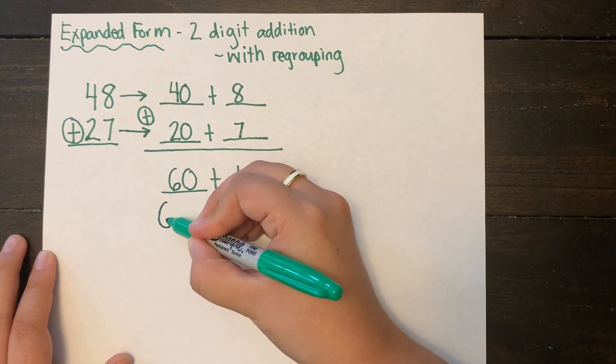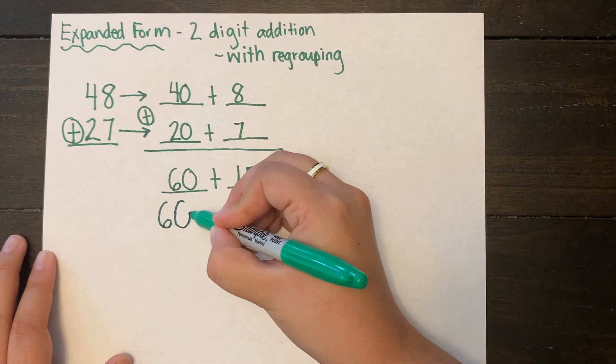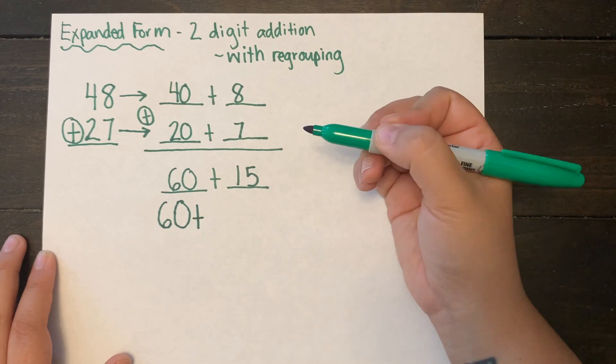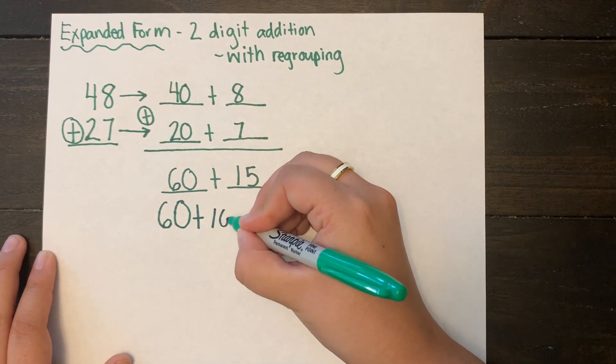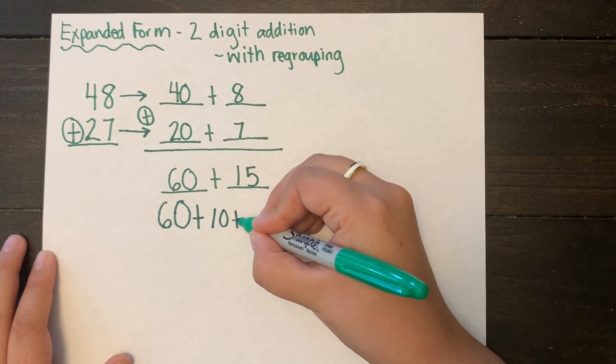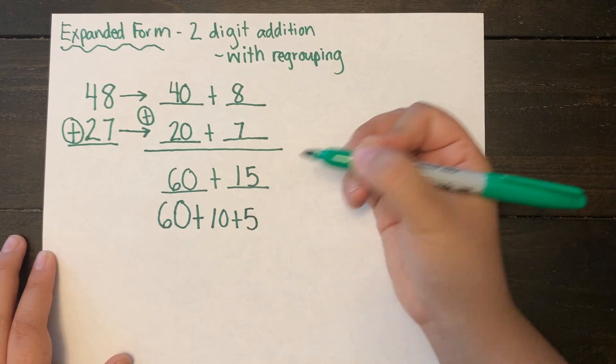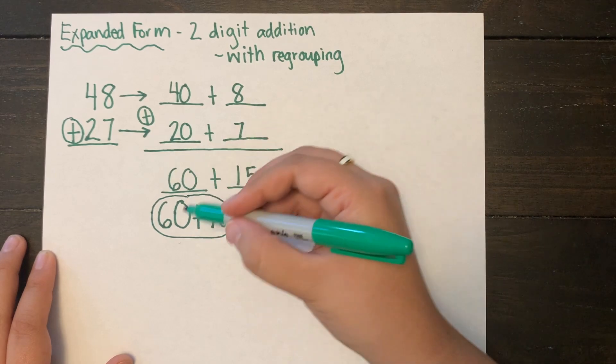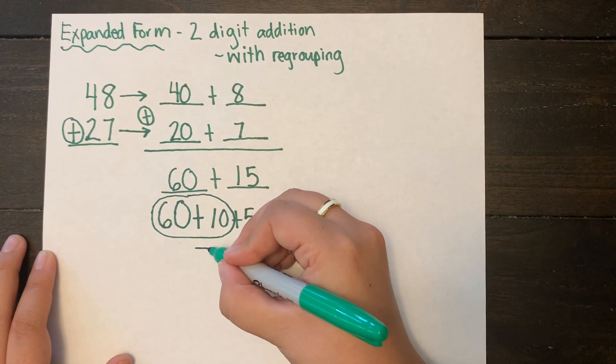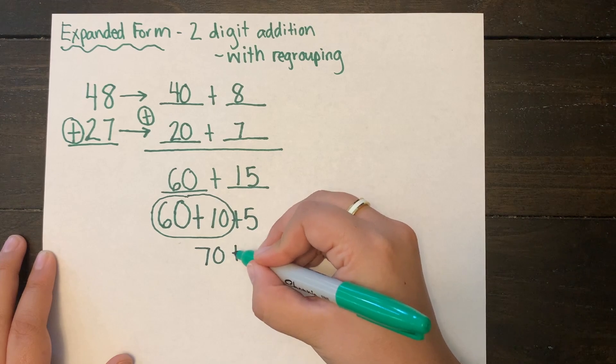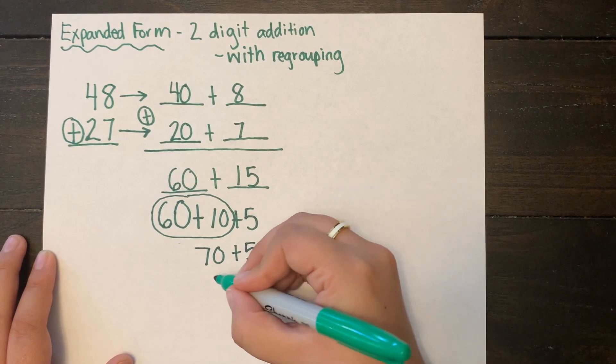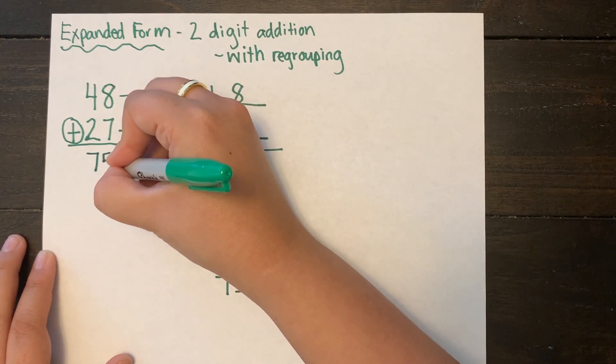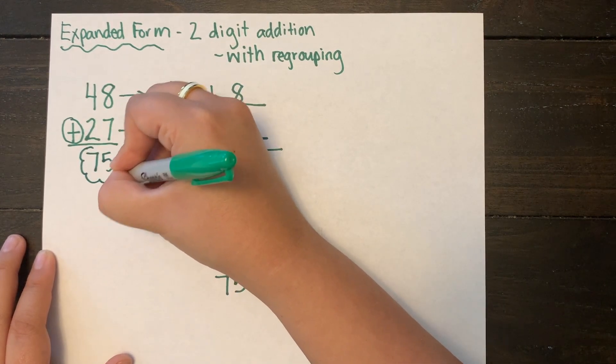So now I'm going to rewrite my equation but I'm going to expand out any numbers that need expanded. So 60 does not need expanded but 15 does. So I'm going to expand out 15 into 10 plus 5. Next I'm going to combine my tens together and I'm going to add them together. So 60 plus 10 equals 70 and then I add on my 5. 70 plus 5 equals 75. So I am going to write my answer underneath the equal sign.